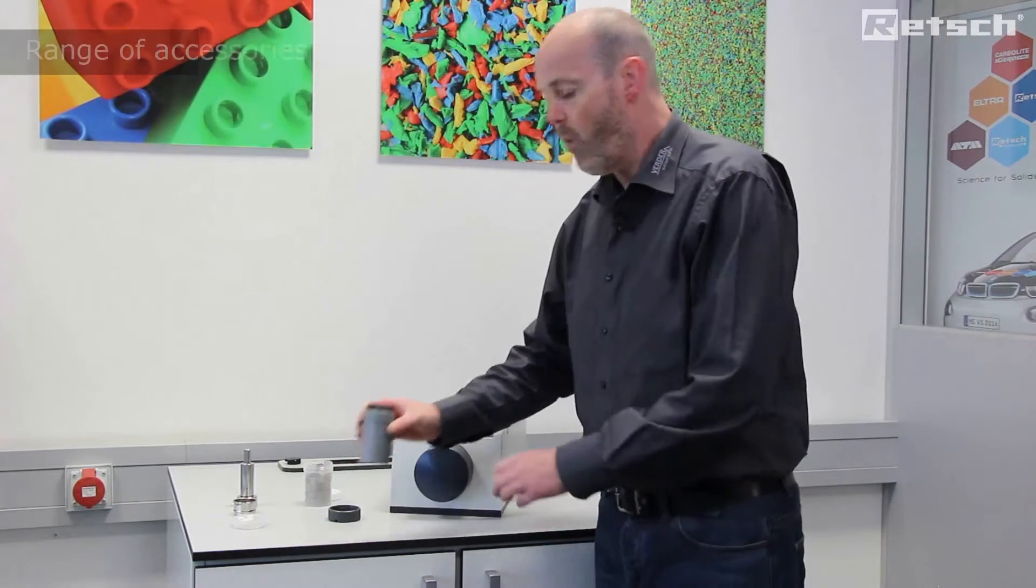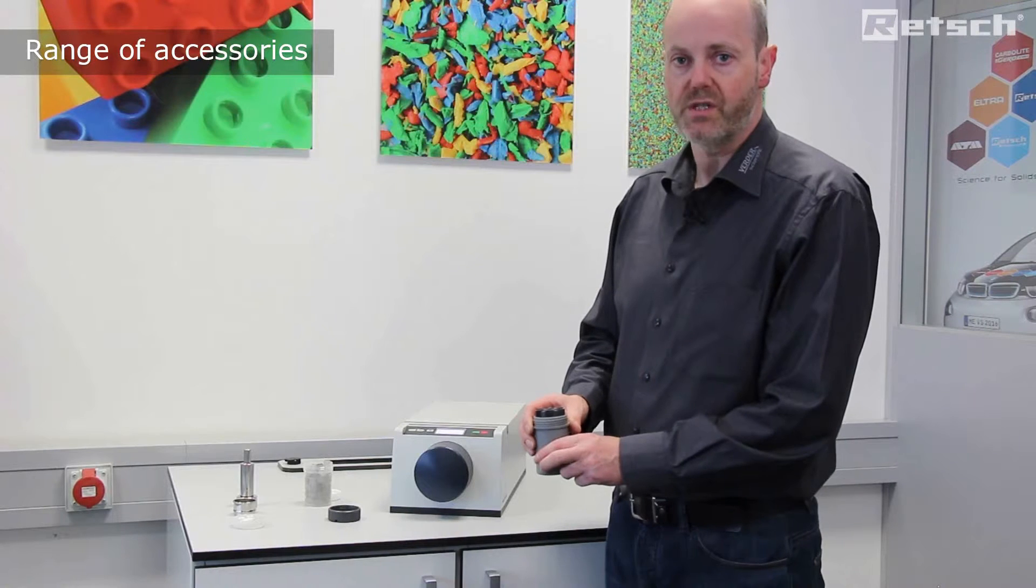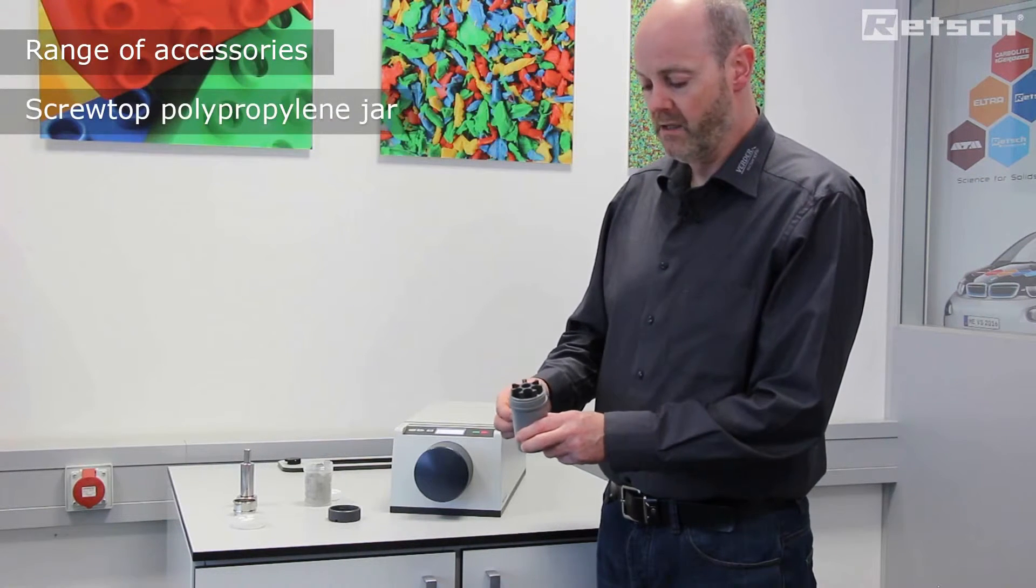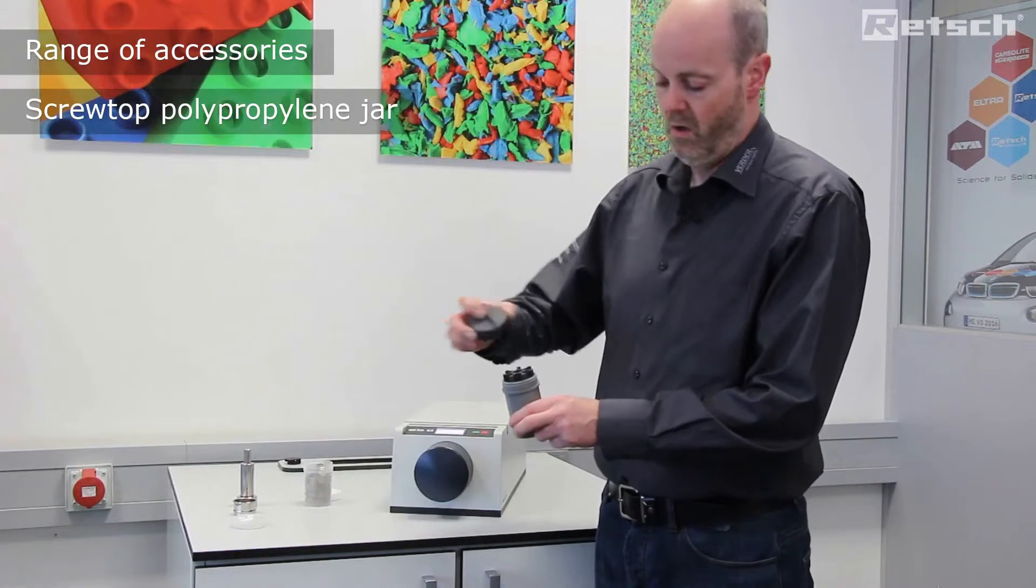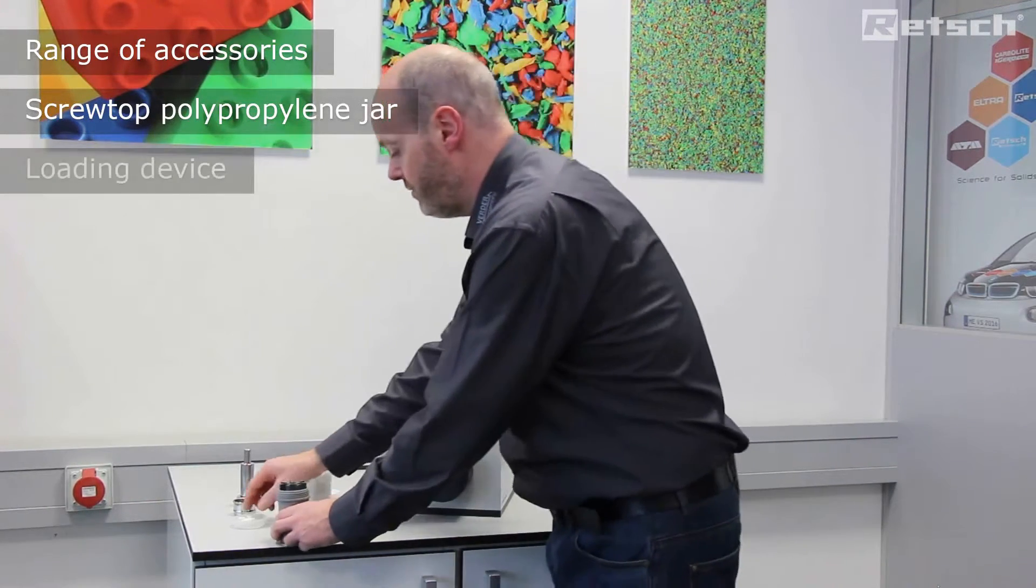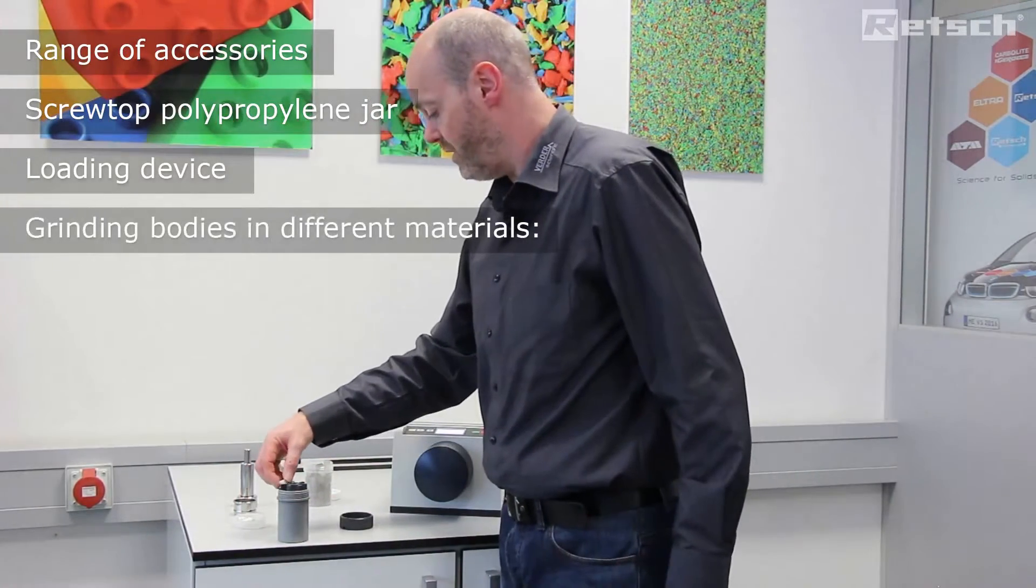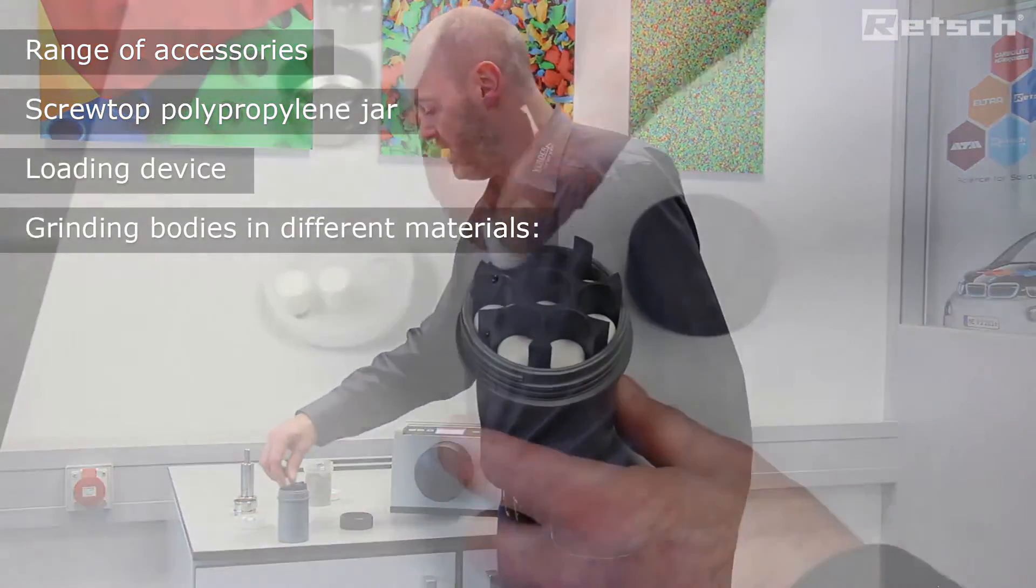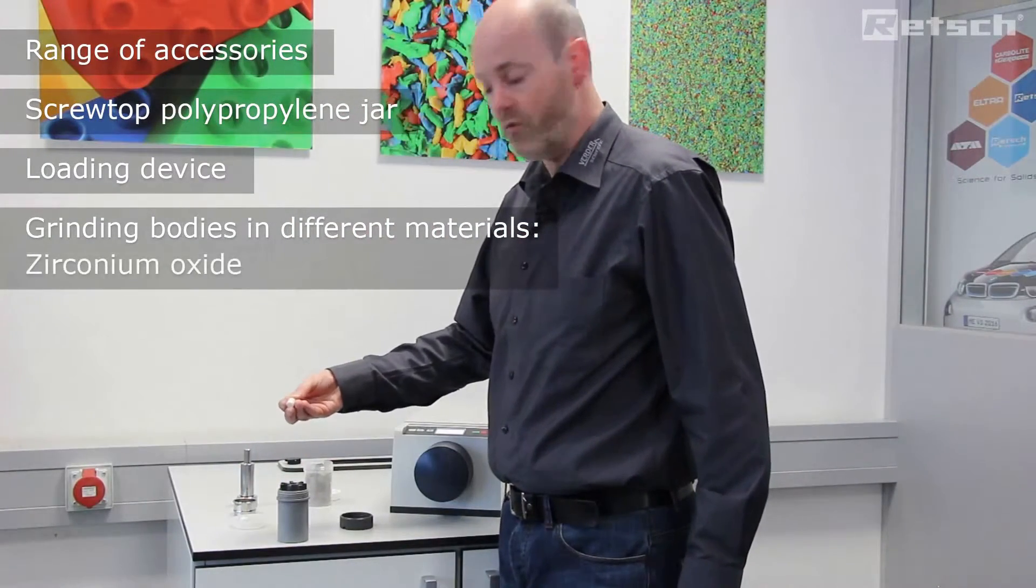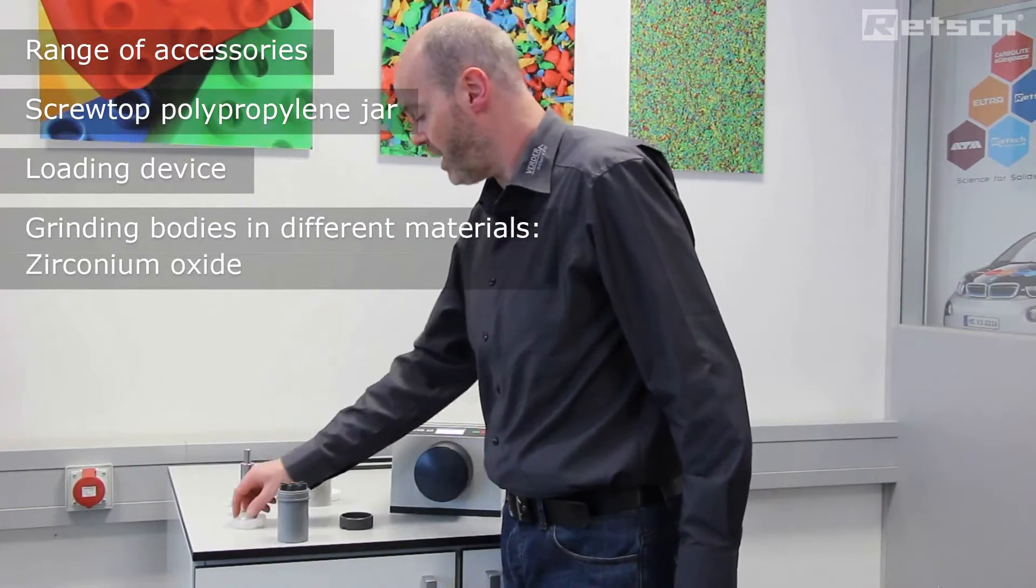We offer a wide range of accompanying accessories together with this instrument. We have a polypropylene jar with a screw top design lid. We have a guide to load up 48 grinding elements, which are available in three different materials: here in the man-made ceramic material, zirconium oxide,